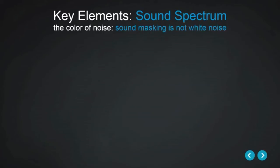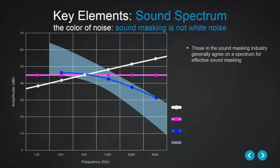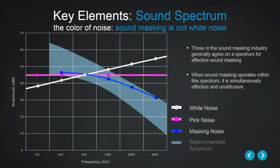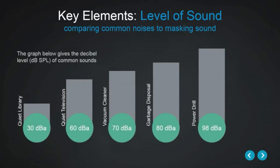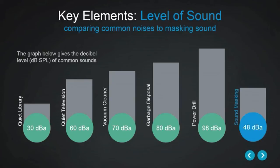The third key element of good sound masking systems is sound spectrum. Once a system is designed to provide uniform coverage and is properly zoned, we must then be concerned with how the noise sounds. The fourth and final key element is overall sound level. Perhaps surprisingly, sound masking operates at no greater than about 48 dBA.